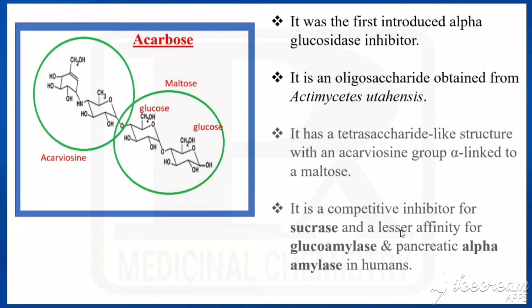Acarbose is a competitive inhibitor for sucrase and has lesser affinity for glucoamylase and pancreatic alpha-amylase in humans.